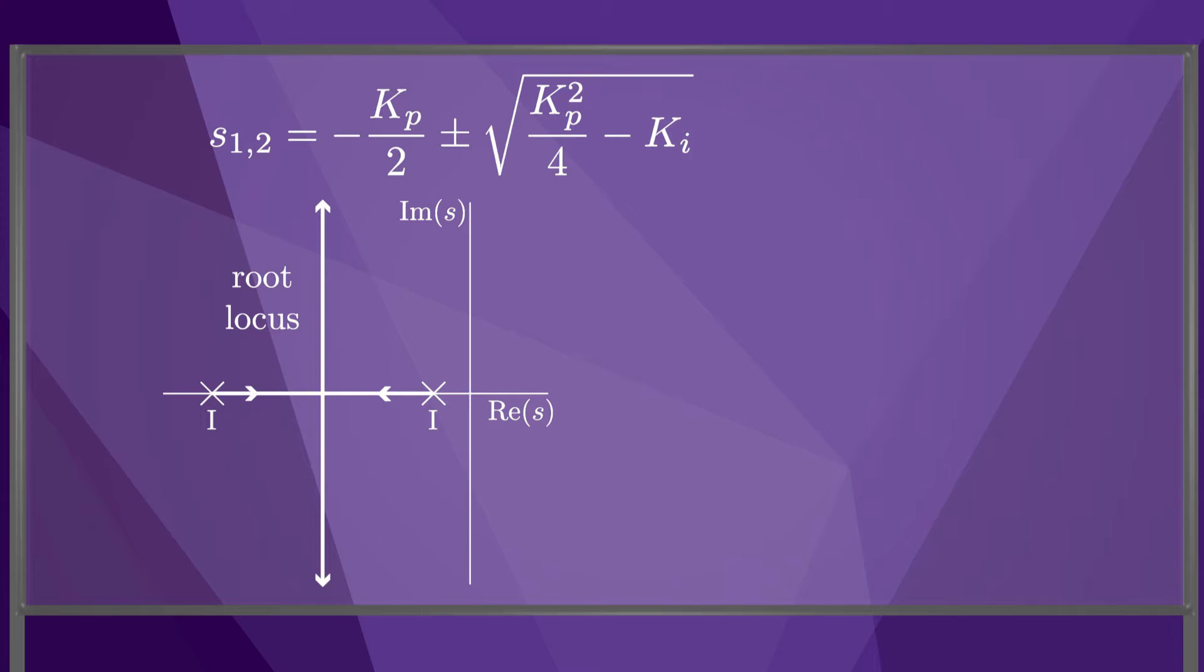We can use the root locus to help us choose control gains. We would like to keep the roots far to the left for fast settling and close to the real axis to minimize overshoot. As discussed before, though, there are limits as to how large we can choose the gains.